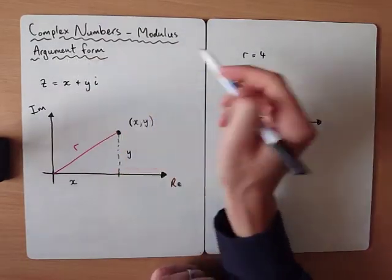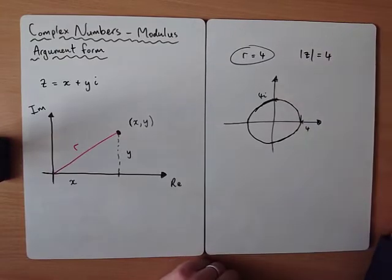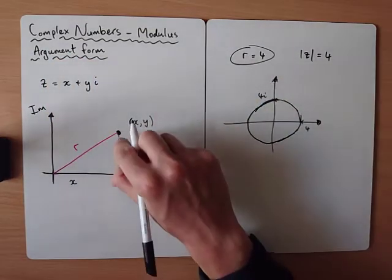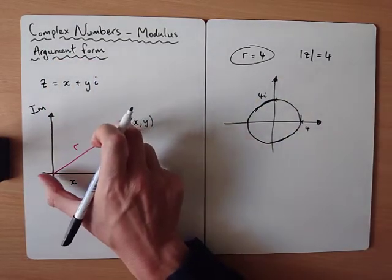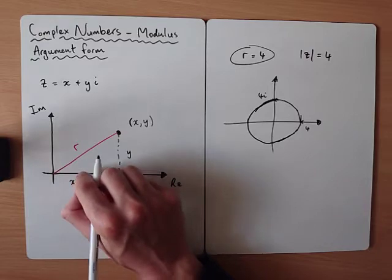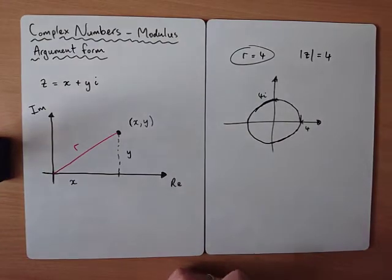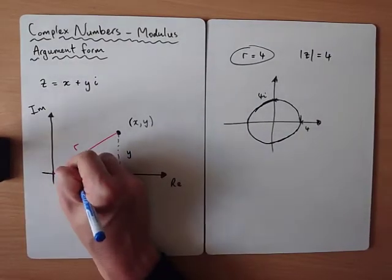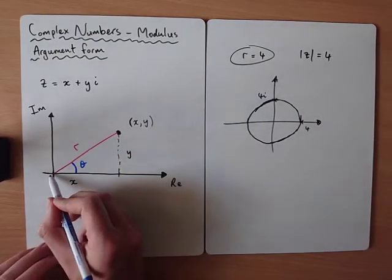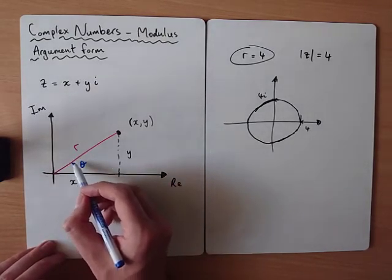In modulus argument form, the modulus (written |z|) is the distance from the origin, and the argument is the angle. Together, the distance and the angle define a specific point. The argument must be measured anti-clockwise from the positive real axis.